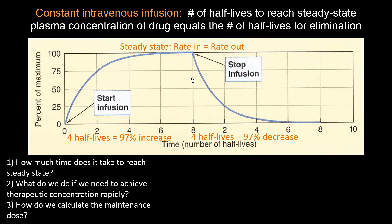We know it takes about four half-lives to decrease about 97%. Note here that the units for the denominator are time in terms of the number of half-lives, and the x-axis is the percent maximum of the plasma concentration. What you might not have been familiar with is that it takes the same amount of time — about four half-lives — to reach about 97% of the steady state concentration.